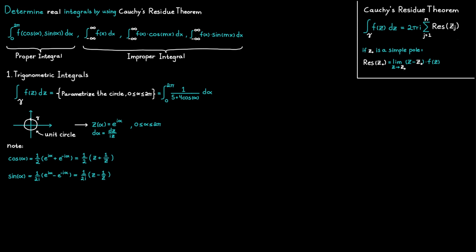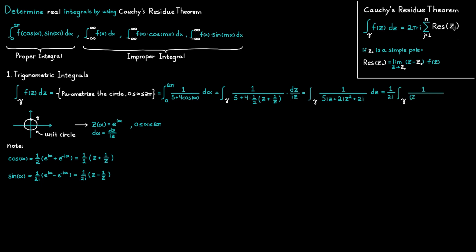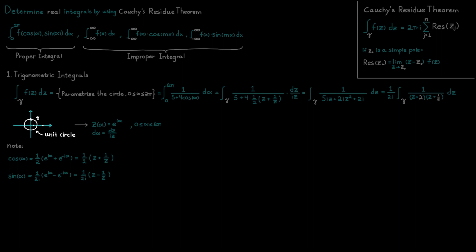Now we insert our new expression for d alpha and our new expression for cosine into the integral. After multiplying everything together and removing the factor 1 divided by 2i outside the integral, we get a simplified form. We can now see that the integral has two poles: one at minus 2 and one at minus one half. Only one of them — the one at minus one half — is actually inside our contour gamma.